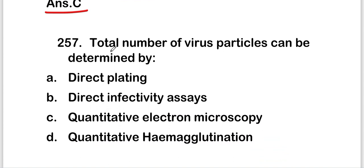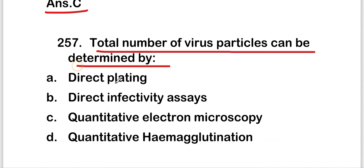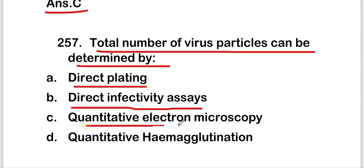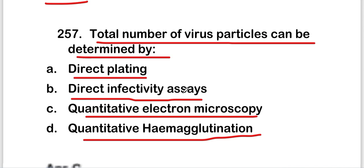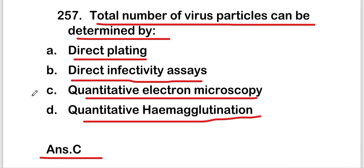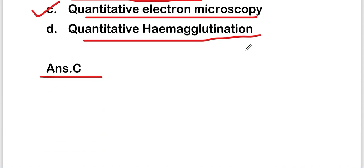The next question: total number of virus particles can be determined by direct plating, direct infectivity assay, quantitative electron microscopy, or quantitative hemagglutination? The right answer is option C — quantitative electron microscopy. Total number of virus particles can be determined by quantitative electron microscopy.